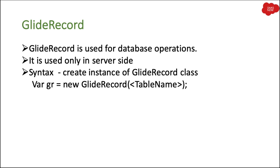GlideRecord is one of the most important APIs for server-side code — if you're a ServiceNow developer you will use this API almost every day. GlideRecord is used for database operations. Anything you want to do on the server — fetch records, insert records, update records, delete records — you can do it with the help of GlideRecord.